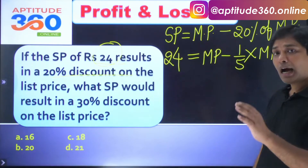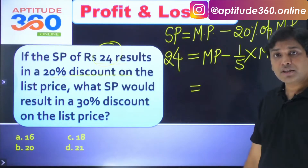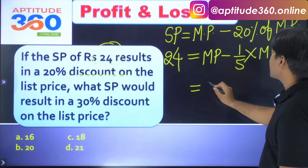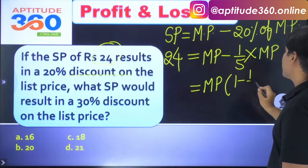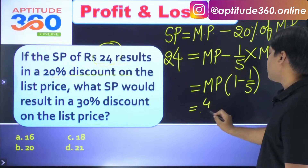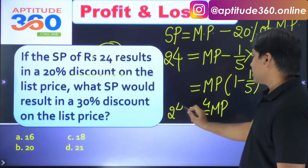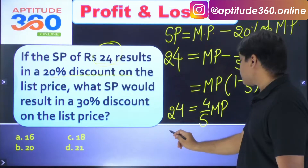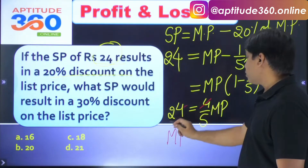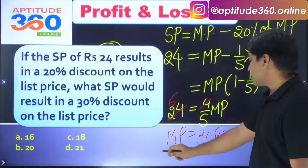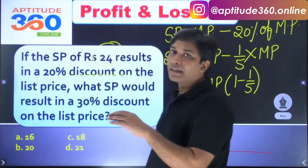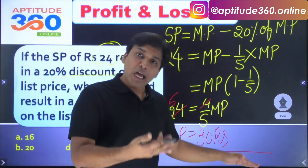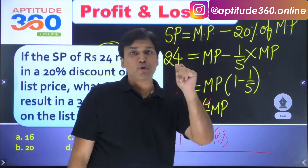Solving: marked price equals 24 divided by (4/5), which equals 30 rupees. After solving 10 to 20 problems, you should be able to see this in your mind: if a 20% decrease gives 24, the original must be 30. Now it says: what is the selling price if you give 30% discount?